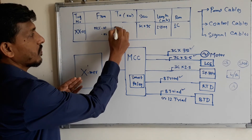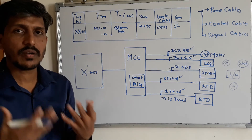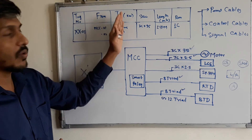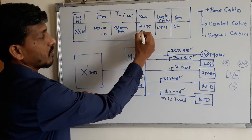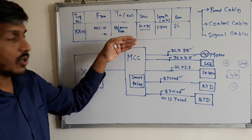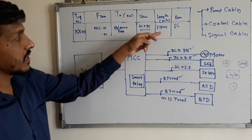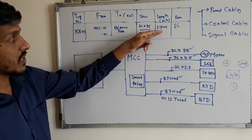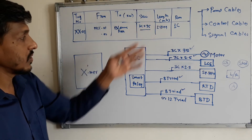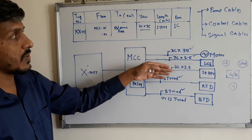From the tag, you mention where the cable is routed — from the MCC to the motor end. You can give a description such as 'blower motor' or 'fan motor' depending on the type. You then mention the cable size, such as 3-core 95mm² for a power cable, 7-core 2.5mm² or 3-core 2.5mm² for control, or an 8-triad signal cable. You also include the cable length — for example, 250 meters or 100 meters — representing the distance from MCC to motor end.